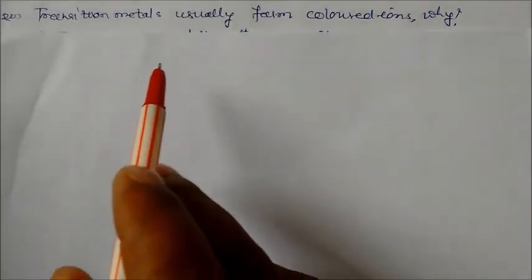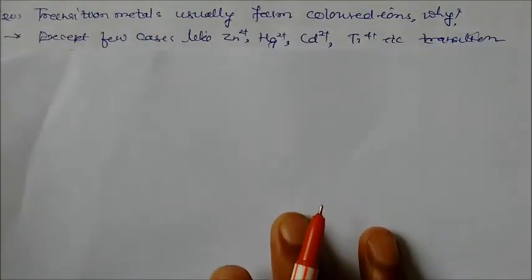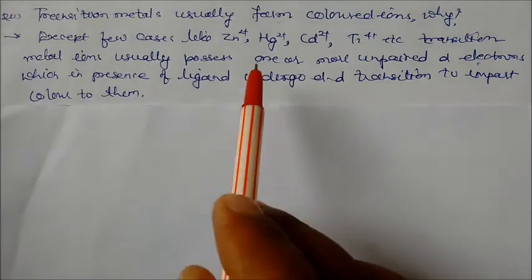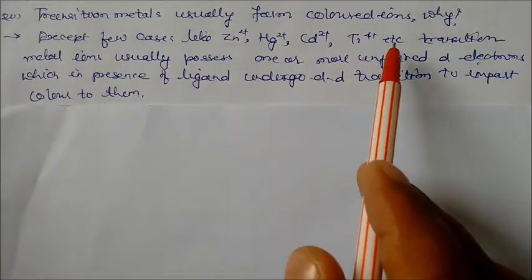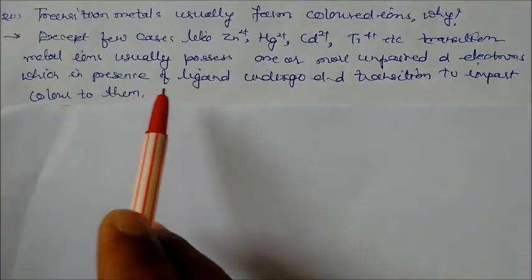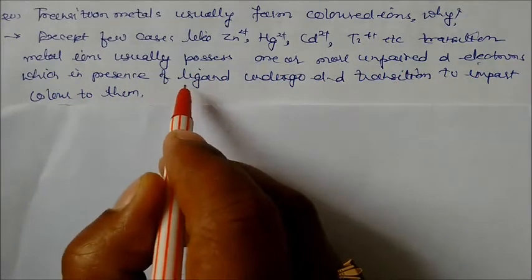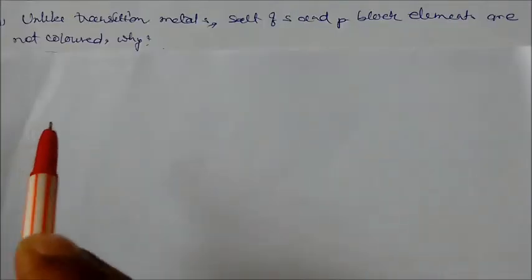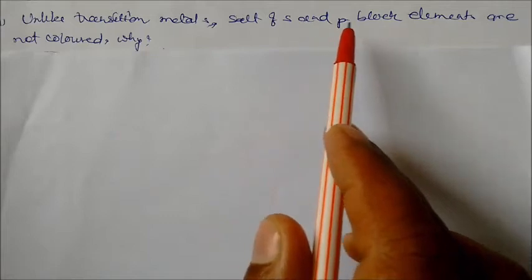Transition metals usually form colored ions. Why? Except for the few cases like zinc and mercury, cadmium and titanium 4+, transition metals usually form one or more unpaired d electrons which in presence of ligand undergo d-d transition to impart color to them.